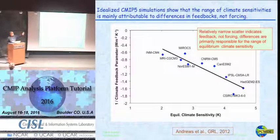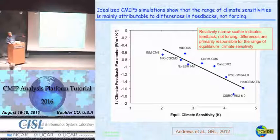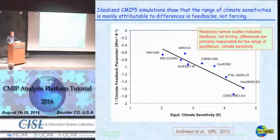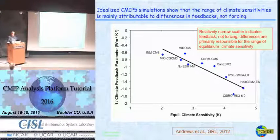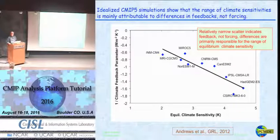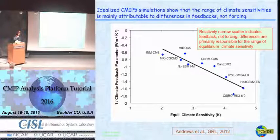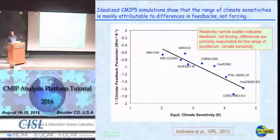Applying that methodology to the CMIP5 models, Tim Andrews led a study plotting the feedback parameter — the slope of the line — for each model against the equilibrium climate sensitivity at quadrupling of CO2. The fact that the points scatter around a line, with not too much scatter, indicates that the strength of the feedback is the primary reason why equilibrium temperatures differ between models, as opposed to forcing differences. The instantaneous effect of quadrupling CO2 varies from model to model, giving rise to the scatter.